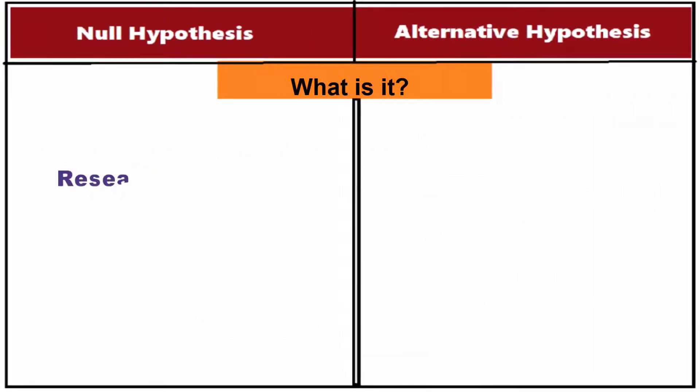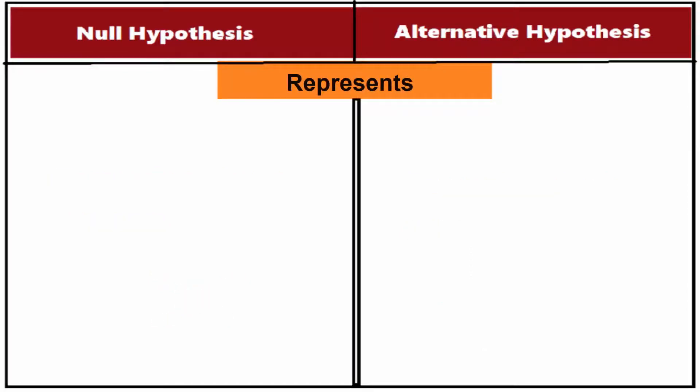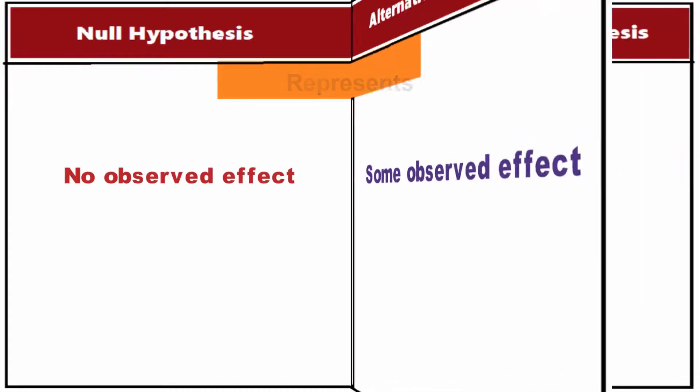What is it? A null hypothesis is what the researcher tries to disprove, whereas an alternative hypothesis is what the researcher wants to prove. Represents: A null hypothesis represents no observed effect, whereas an alternative hypothesis reflects some observed effect.